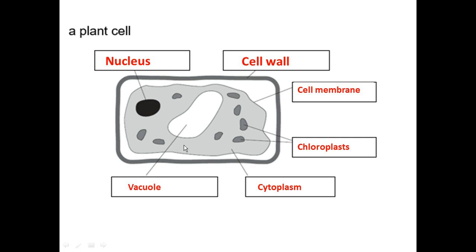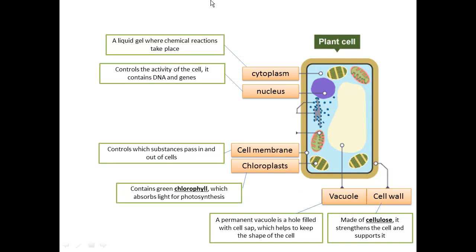Just as each organelle in an animal cell has a specific function, let's look at the functions of plant cell organelles. We still have cytoplasm, nucleus, and cell membrane — the same as in an animal cell. The cytoplasm is where chemical reactions occur, the nucleus controls the cell, and the cell membrane controls what goes in and out of the cell.